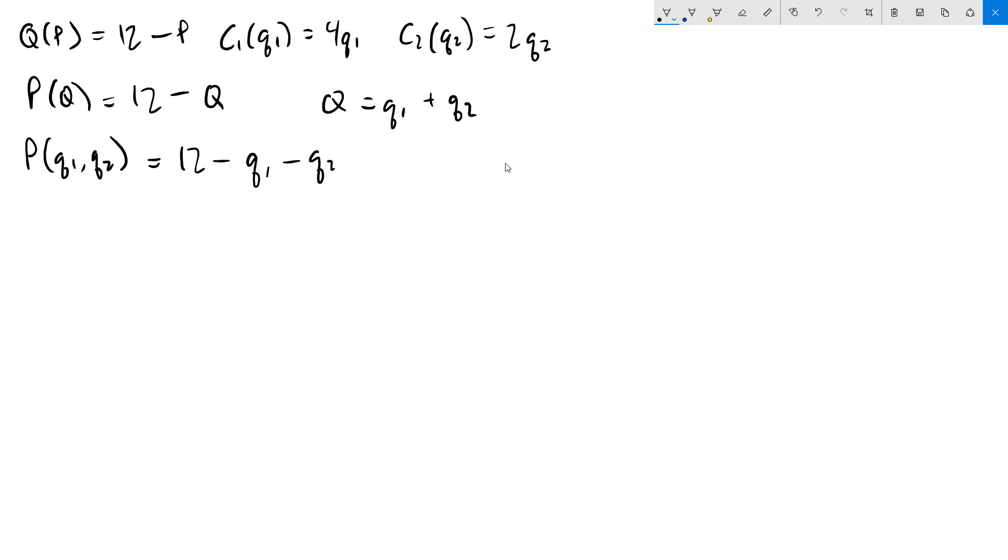So we'll get p of q1 q2 equals 12 minus q1 minus q2. Remember that we have to distribute the minus sign here, so it's going to be minus both of the individual firm's quantities. Now that we have everything in terms of q1 and q2, we're now ready to write out the profit functions for each firm.